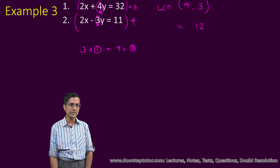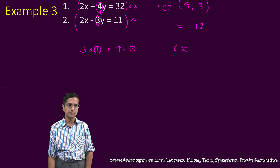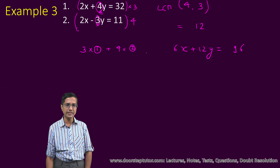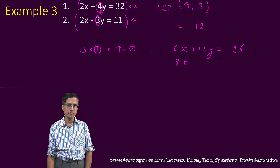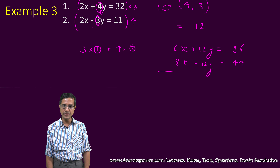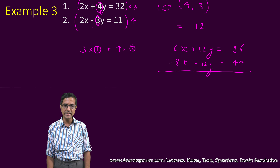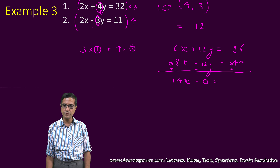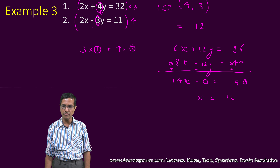So this becomes 6x plus 12y equal to 96. And here we have 4 into 8x, which becomes minus 12y equal to 44. The signs come naturally — this is a plus and this is a minus, so if we simply add, the y terms cancel. We then just add these two equations. 6x plus 8x equals 14x, the y terms subtract to zero, and the right side gives 140. So x comes out to be equal to 10.